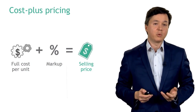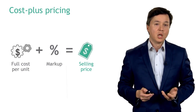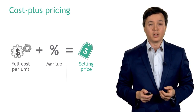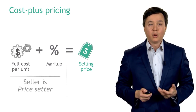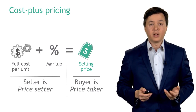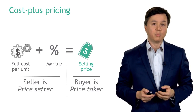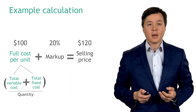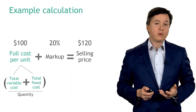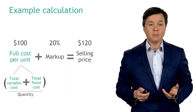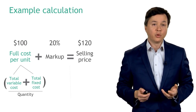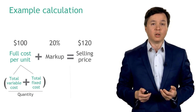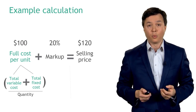Cost plus pricing is a pretty straightforward approach. You take your full cost per unit, apply a markup, and this sets your selling price. The seller is the price setter and the buyer is the price taker, expected to pay your asking price. For example, if your full cost is $100 — including all variable costs plus fixed costs divided by quantity — and you add a 20% markup, this gives you a selling price of $120.